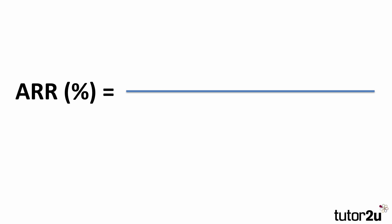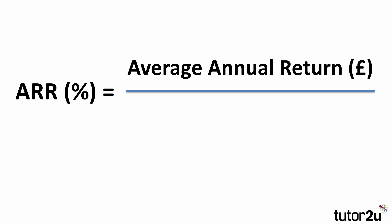Don't forget in A-level business exams, you're not given the formula, so you need to remember the formula for calculating ARR. It's a percentage, and we do this by dividing the average annual return — in monetary value here in pound notes — by the project's investment, and express that as a percentage. So we always multiply by 100 to get a percentage return.